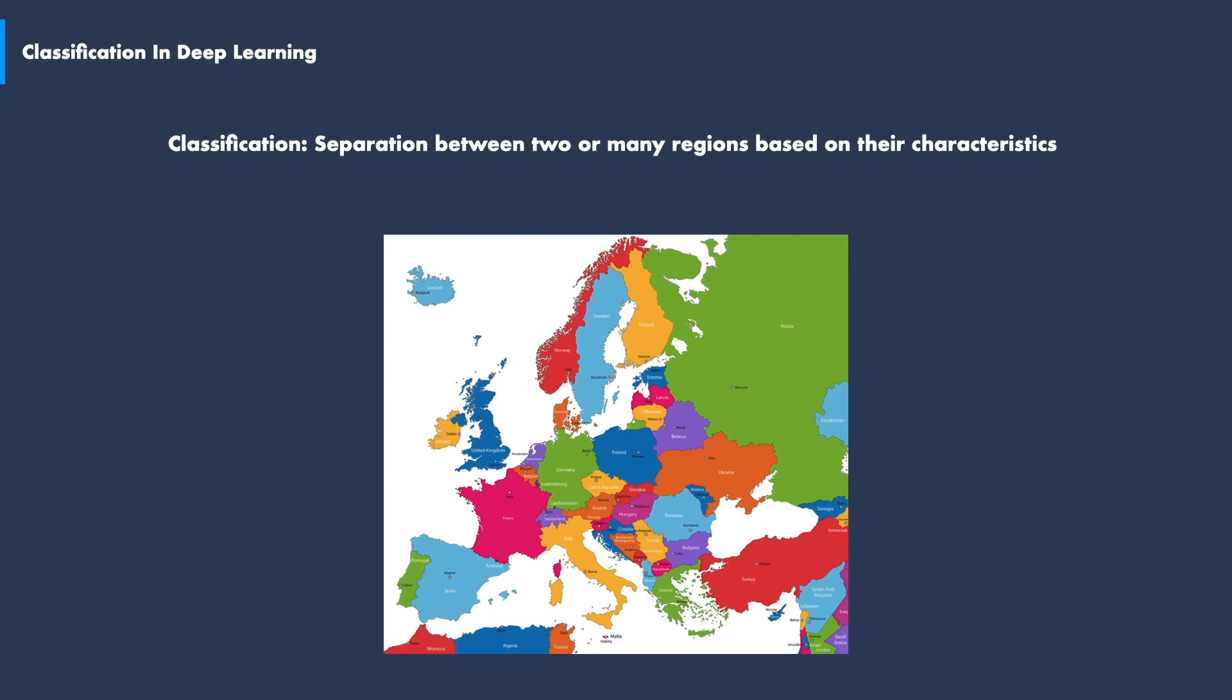In this case, the data set is a map. Classes are separated due to their different characteristics. In the case of countries, these characteristics are likely to be related to culture, language, history, ethnicity and so on.